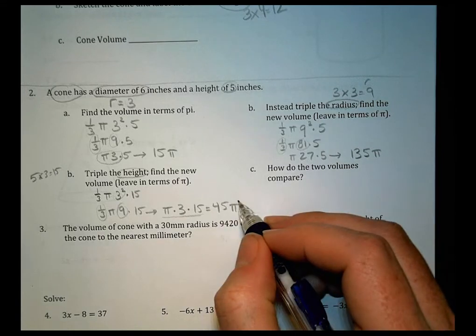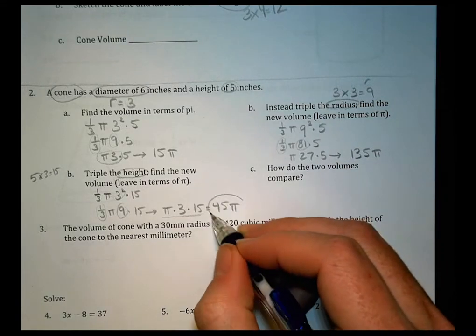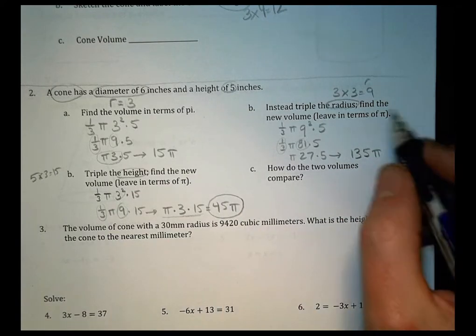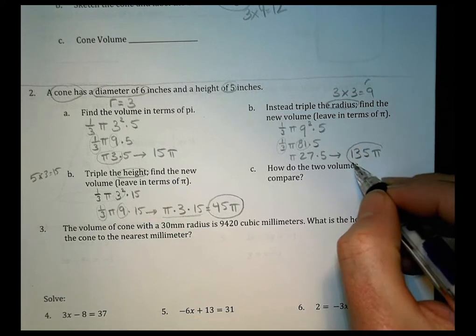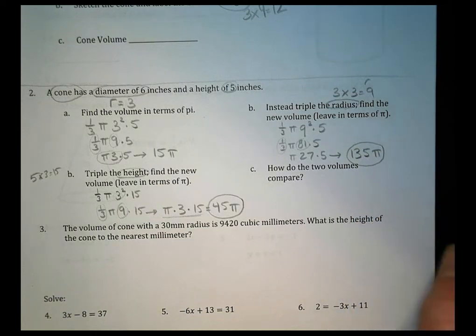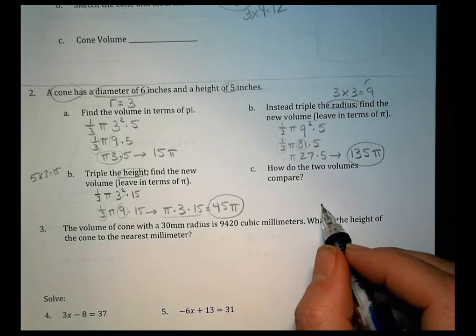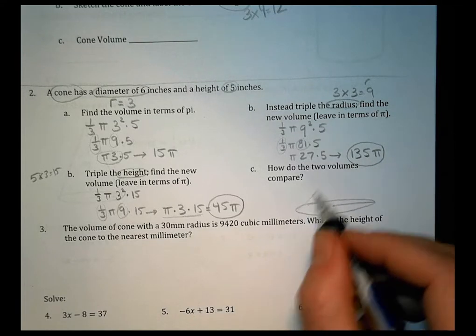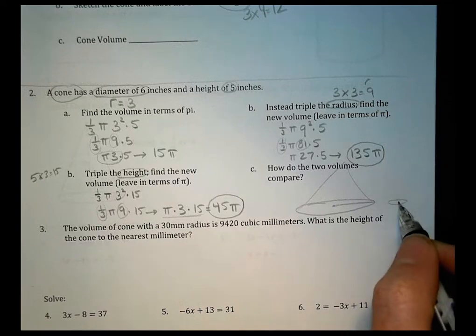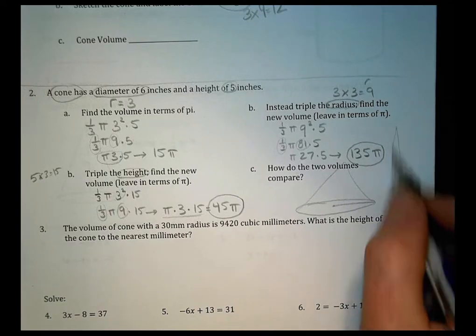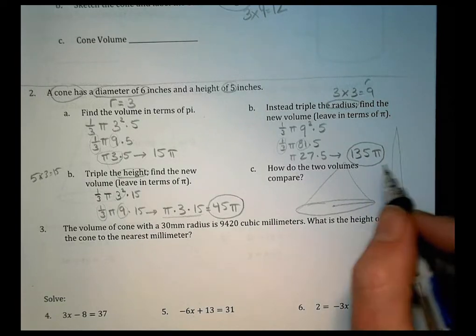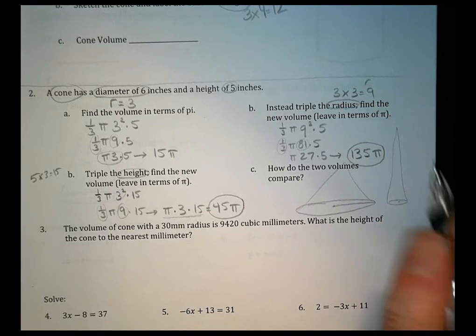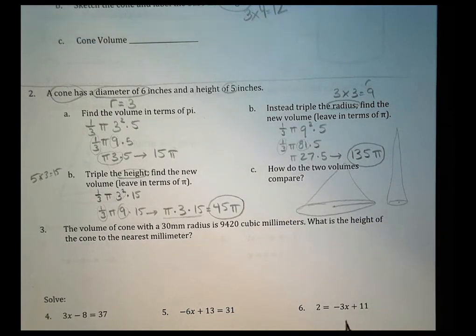So we want to compare the two volumes. So if I triple the height, I have 45 pi. If I triple the radius, I have 135 pi. So what we're seeing here is that the greater the radius is going to be, the greater the volume is going to be. So I could triple the height all I want. But the volume is going to become larger if I increase the radius size. So write something about that there in that space.